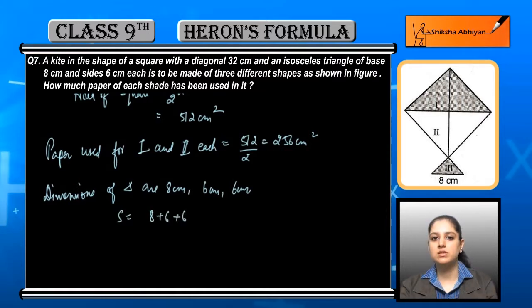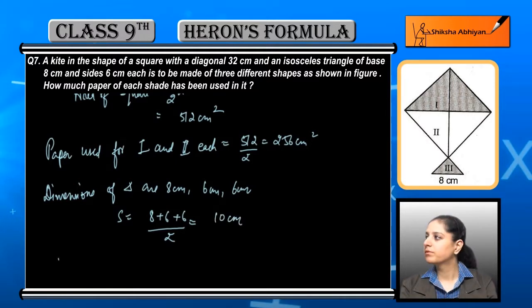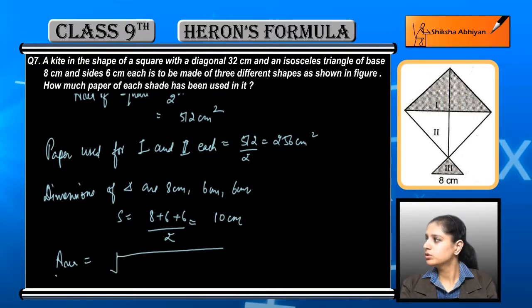We have to find the semi-perimeter, which is equal to 8 plus 6 plus 6 divided by 2, that is 10 cm. Now finally area of the third region is equal to under root of the semi-perimeter.